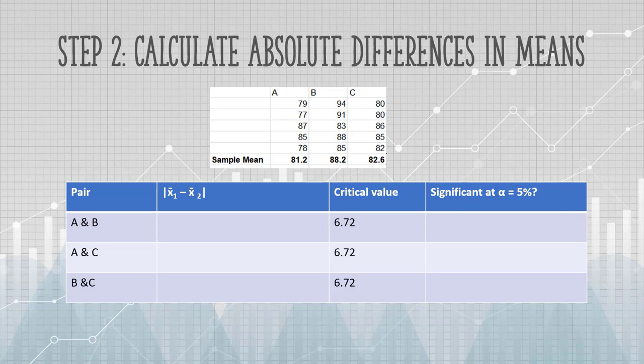Next, I want to find the absolute differences in each pair of means. To do that, subtract your two sample means and find the absolute value. Now we can compare our differences to the critical value. If the difference is larger than the critical value, we can reject the null hypothesis that the means are equal. The first pair, A and B, has an absolute difference of 7.0. This is greater than the critical value, so we can reject the null hypothesis. In other words, our result is significant at an alpha level of 5%.